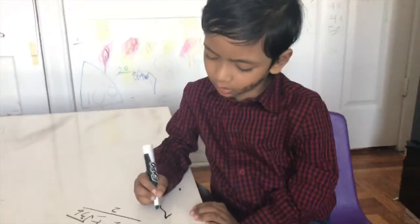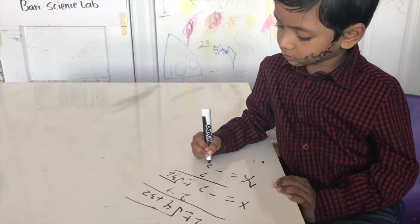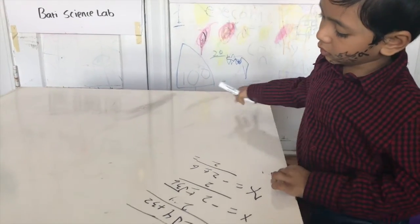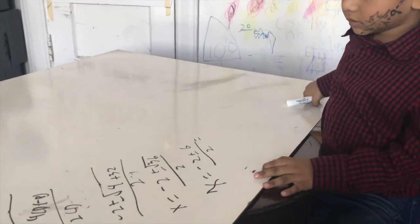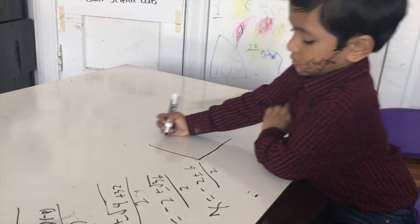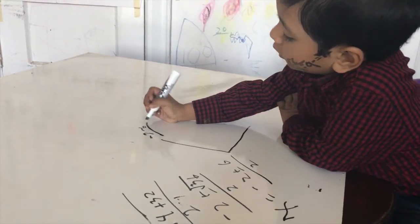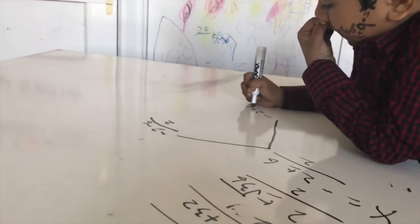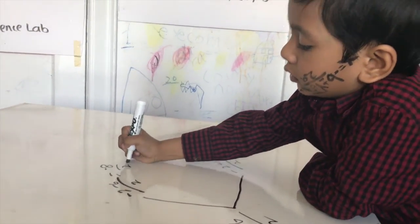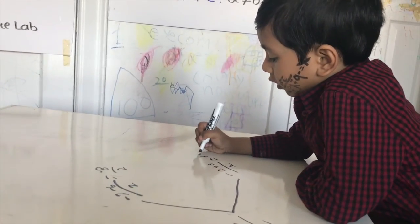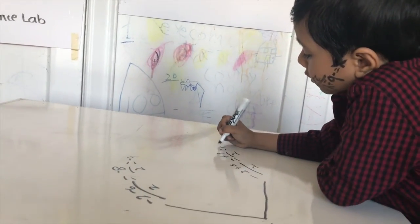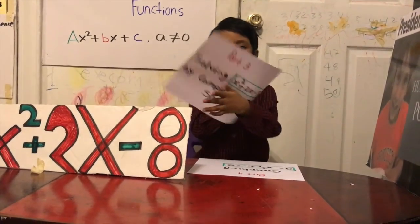That is X equals negative 2 plus or minus 6 over 2, which separates into two values: negative 2 minus 6 over 2, and negative 2 plus 6 over 2. So X equals negative 8 over 2, which is negative 4, and 4 over 2, which is 2.